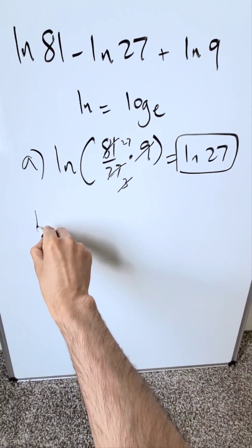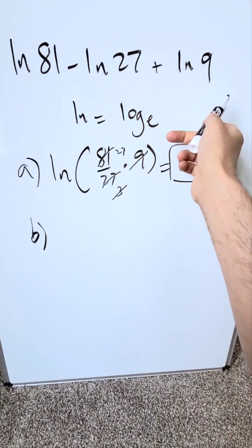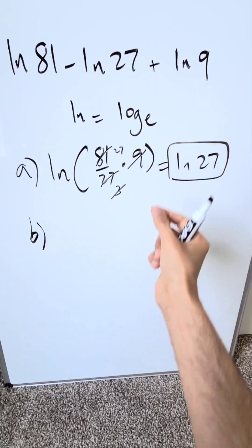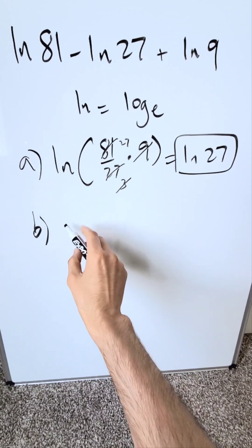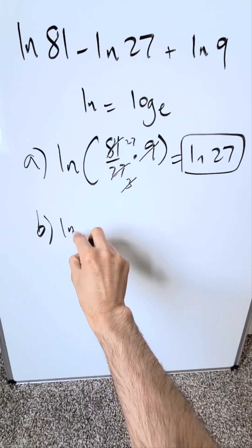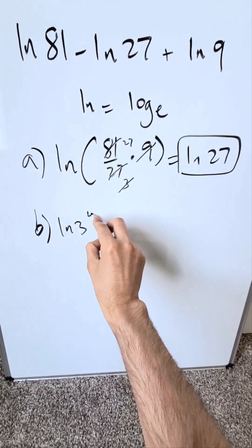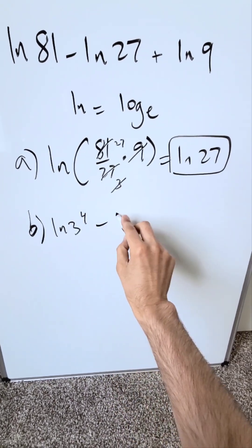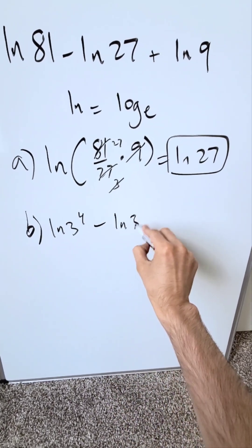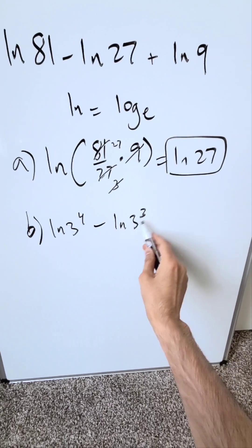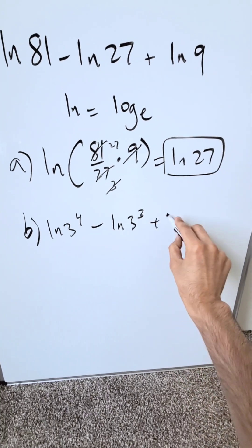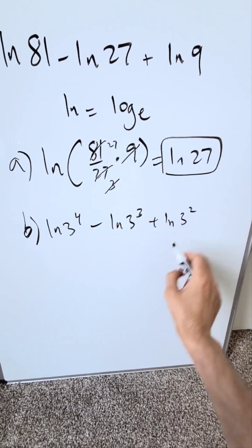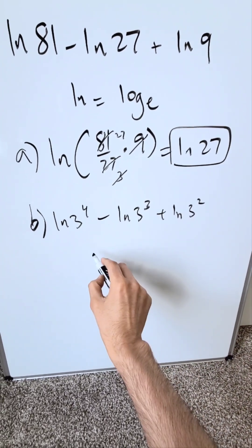Way number two: simplify these independent items only and then bring them together. I'm looking at natural log 3 to the power 4 — that's 81 — minus natural log 3 cubed, that's 27, plus natural log 3 squared, which is 9.